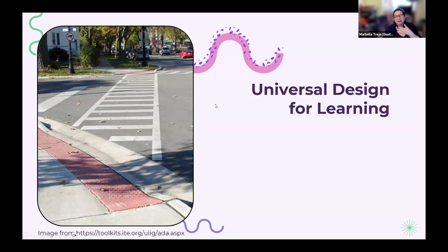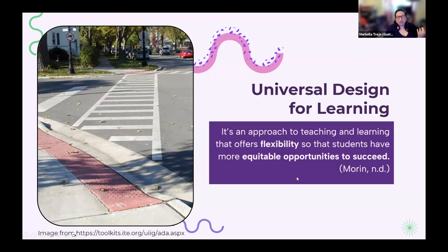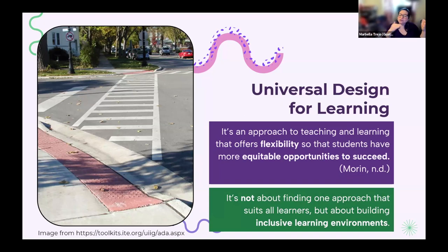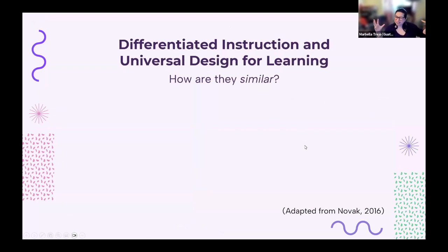A lot of UDL actually relates to some of the principles you may have already seen discussed. When we think of Universal Design for Learning, it's an approach to teaching and learning that offers flexibility — integrating that into our classrooms and training spaces so that students have equitable opportunities to succeed. It's not about finding one approach that suits all learners, but about building inclusive learning environments. The shift is a little different: rather than thinking about the individual, you're thinking about what are the barriers for success in the environment.